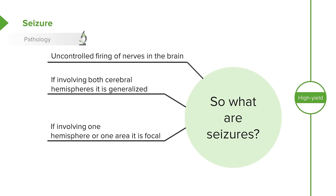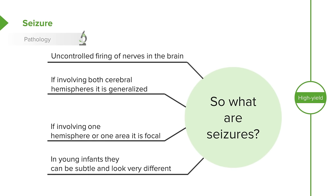If involving one hemisphere or one area, it may be focal, involving one extremity or one simple area of the body. In young infants, seizures may be very subtle and look very different than in older folks. They can be just little jittery movements and sometimes they're missed by doctors and parents alike.